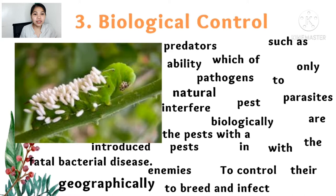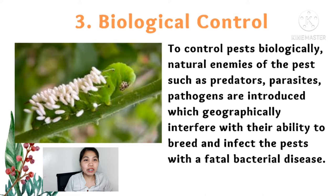Third: biological control. As you have noticed in the picture, there are parasites that attack caterpillars, which are pests. In order to prevent pests from interfering, breeding, and infecting plants, a parasite is introduced to attack or eliminate the pests. That's how biological control works.